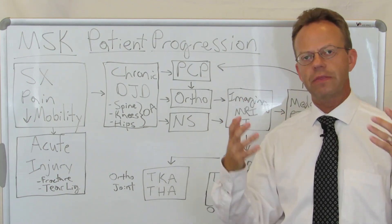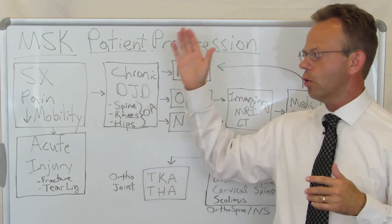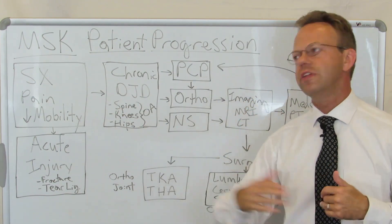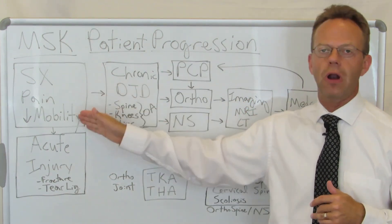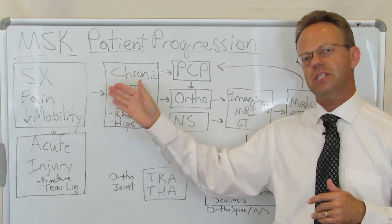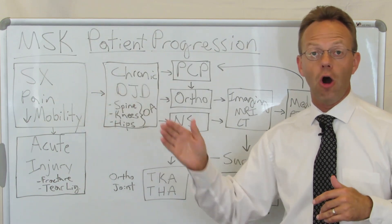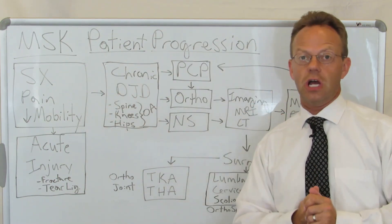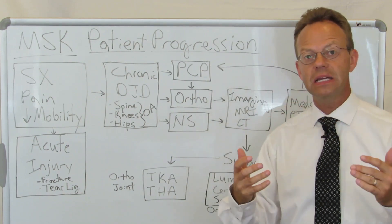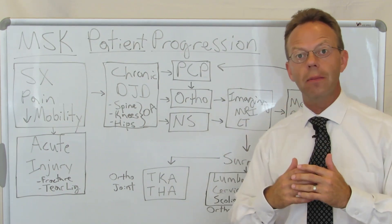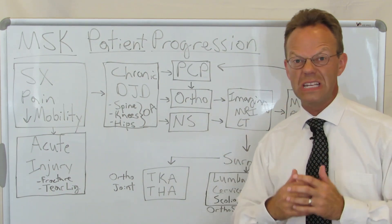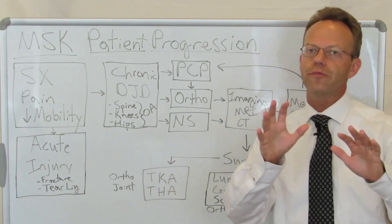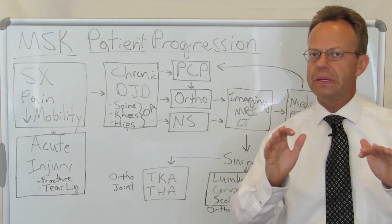The discomfort and suffering that occur with pain and decreased mobility are a big deal. The other health problems that come as a consequence, especially of decreased mobility, include things like weight gain, which comes with concomitant diabetes. There are major problems like pressure ulcers if your decreased mobility is severe enough. Movement is a big deal.